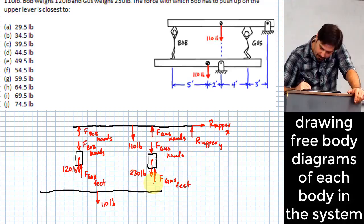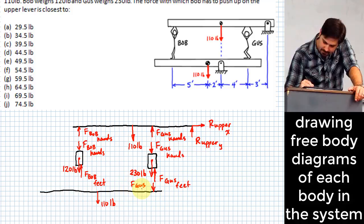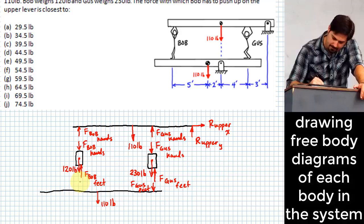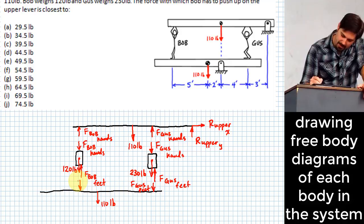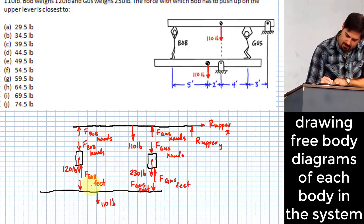Now I've got their feet down here. So I've got a force acting from Gus's feet right here. F_Gus feet. And what else? F_Bob feet. And I may not have drawn all of this perfectly to scale, but we'll deal with it. So this is F_Bob feet.